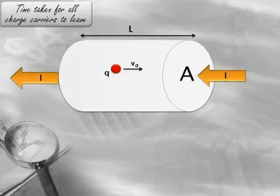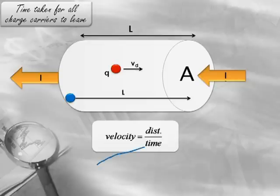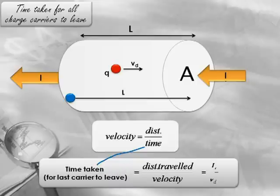Since I need to find the relationship between current and velocity, I'm going to bring in a velocity term here and equate it to the time taken. What's the relationship between velocity and time? We know velocity is equal to distance divided by time, so time will be equal to distance divided by velocity. In the case of our conductor, the last charge carrier located at the extreme end will have to travel the entire length of the conductor L. Its average drift velocity is Vd, so time taken for the last charge carrier to leave the cylindrical wire is L divided by Vd.